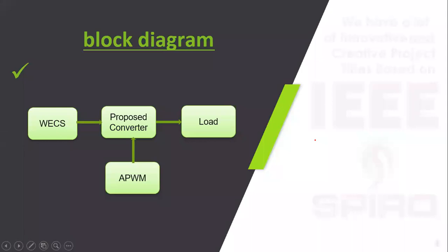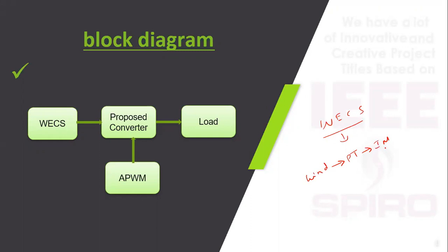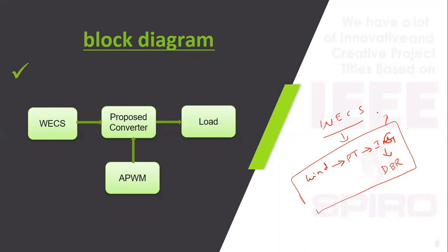This is the block diagram. The input is the wind energy conversion system, which comprises the wind source connected to a power train, an induction generator, whose output is connected to a diode bridge rectifier. These components together form the wind energy conversion system. It is then connected to our proposed magnetically coupled inductor converter to produce a high gain output, with asymmetric PWM used for switching control.